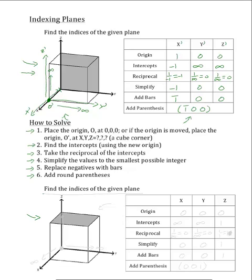Now we will solve for the indices of this bottom plane. Just like above, the first step will be choosing the origin. We can place the origin at zero, zero, zero for this problem, because the plane does not intercept that point and it is at a cube corner which is close to the plane. The next step is to find the intercepts, using our origin and x, y, and z axes.